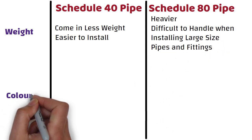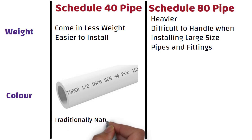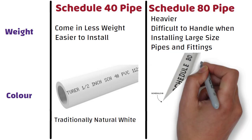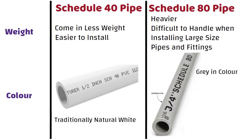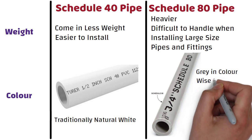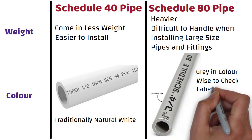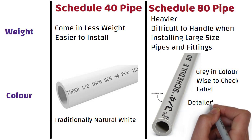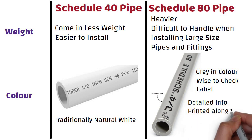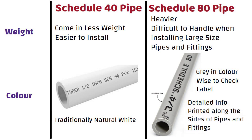Color: Schedule 40 pipe is traditionally natural white, lacking any color additives. Schedule 80 pipes are usually gray in color. However, specific manufacturers may not follow this common color pattern, so it is wise to check the label and always verify by reviewing the detailed information printed along the sides of pipes and fittings.